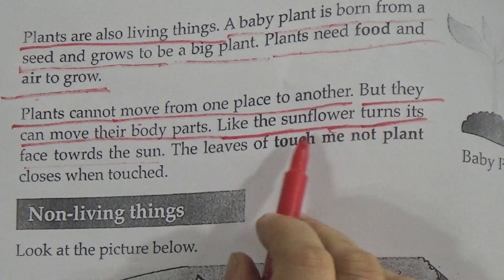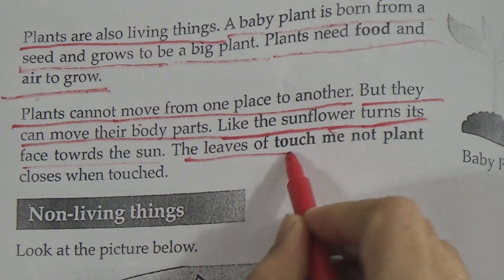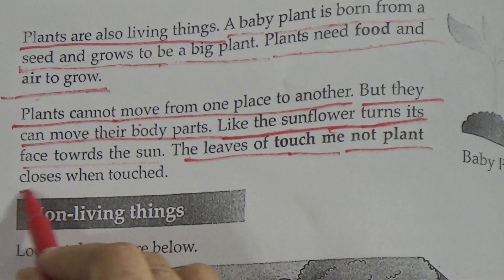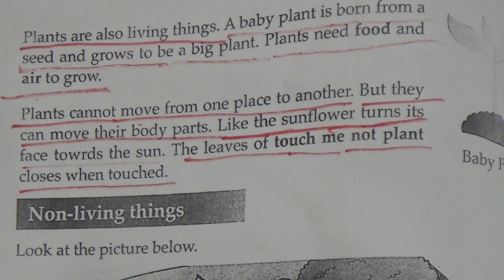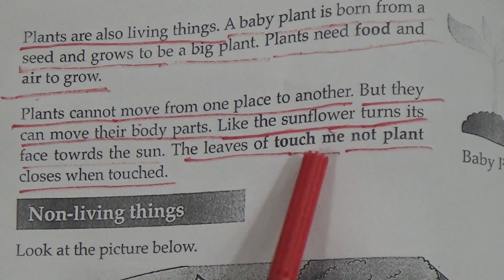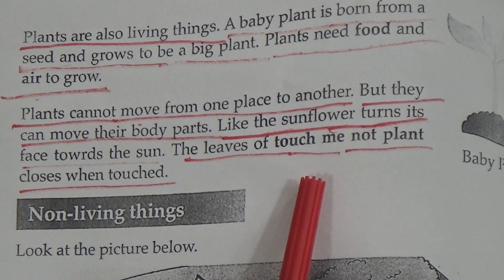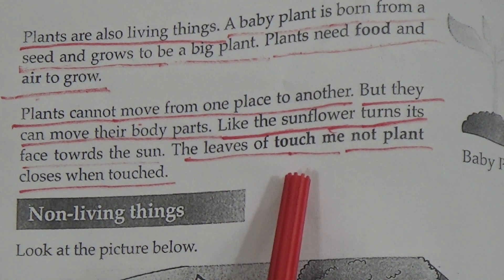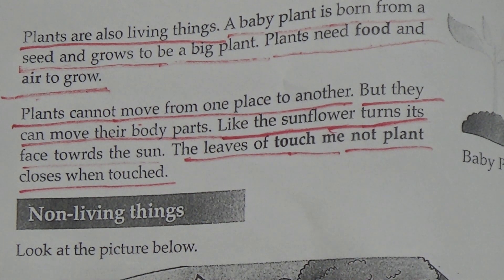For example, the sunflower turns its face towards the sun. And the leaves of the touch-me-not plant close when we touch them. That means there is a plant called the touch-me-not plant, and when we touch it, the leaves close.